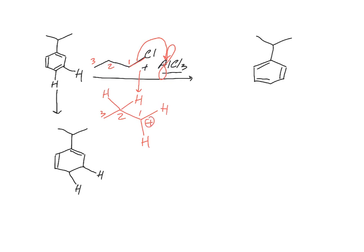Primary carbocation is very unstable. And if there is a more highly substituted carbon next door with hydrogens or alkyl groups, that will result in carbocation rearrangement from the less to the more stable carbocation. So we have a 1,2 hydride shift in this example.